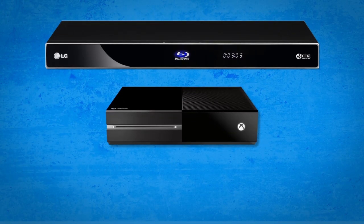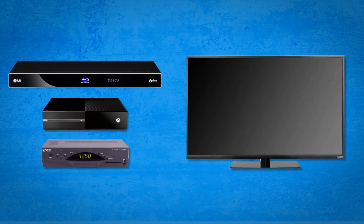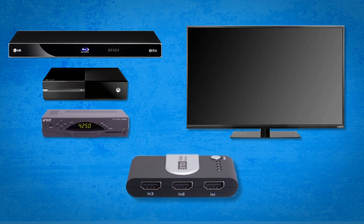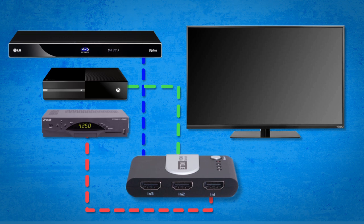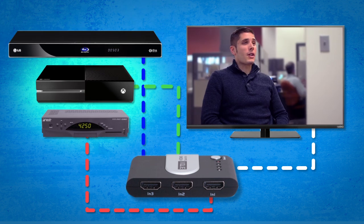Let's start with the HDMI switch. A switch is used when you have multiple source devices, like a Blu-ray player, a gaming system, and a cable box, and you want to run them into a single TV or monitor. All three devices will plug into the switch. Then a single cable can be run from the switch into your display, allowing you to choose between which device you want to see.